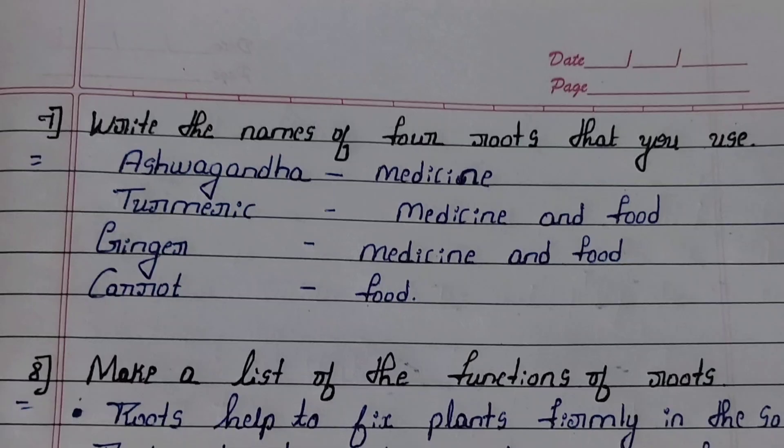Seventh question: write the names of four roots that you use. Answer: ashwagandha — medicine; turmeric — medicine and food; ginger — medicine and food; carrot — food.